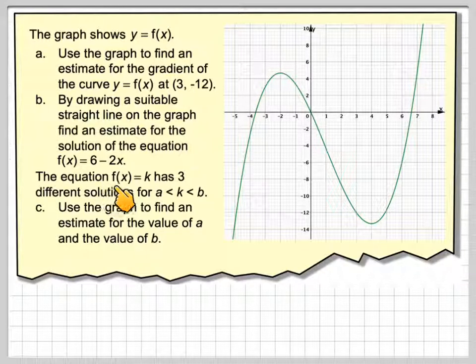The equation f of x is equal to k, which is a horizontal straight line, has three different solutions for k being between a and b. Use the graph to estimate the value of a and the value of b.